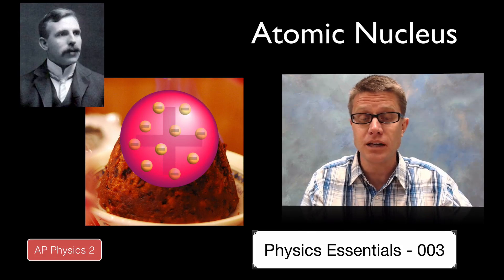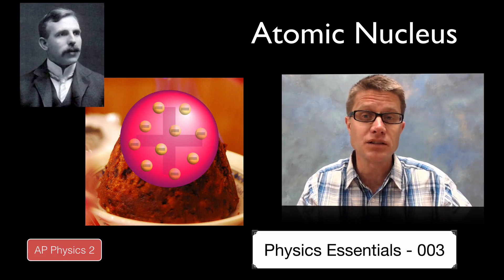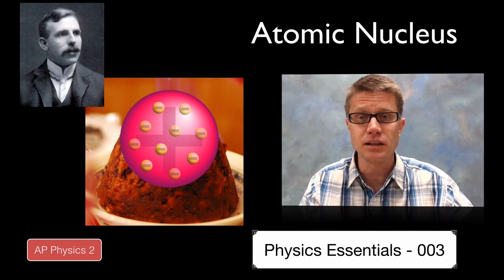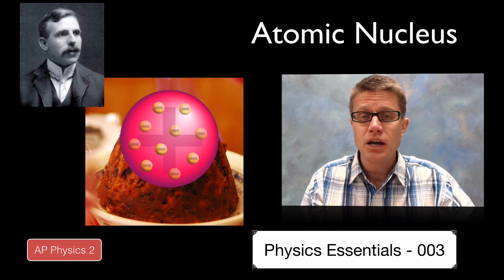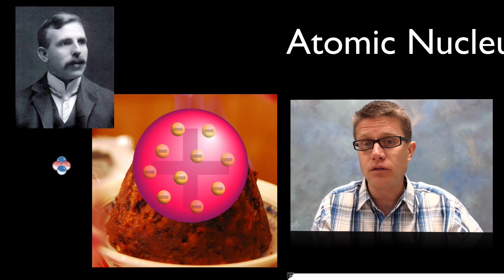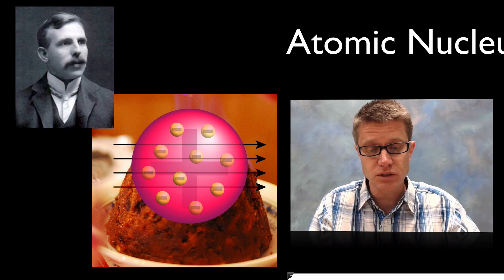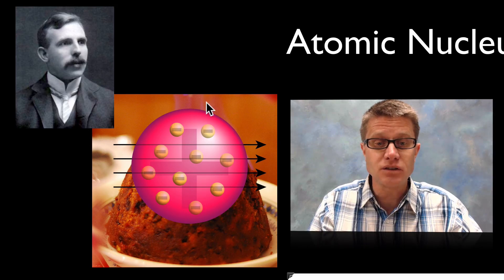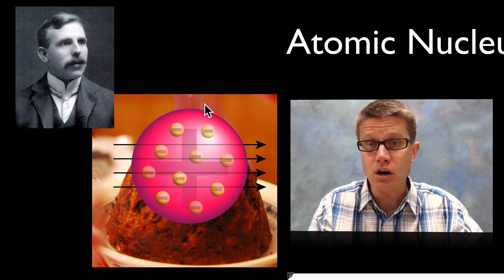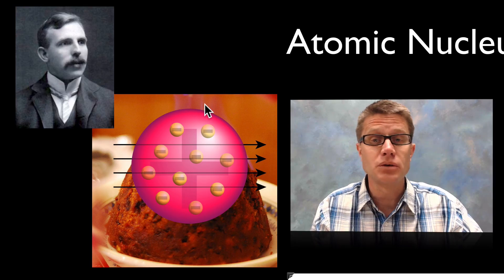So they thought the atom looked like this. It was this amorphous positive charge inside the atom and then these little negative charges were interspersed. And so what Rutherford did is he shot alpha particles at it. Those have a positive charge. So he assumed they would just go right through. Since there was no positive centering of that positive charge that they would just kind of move through in a straight line.